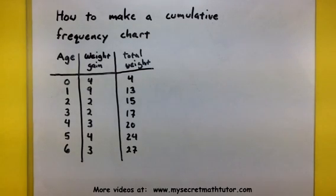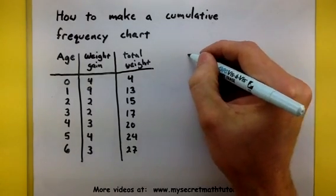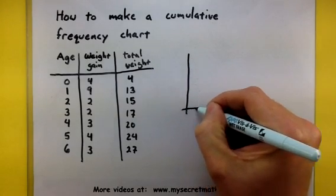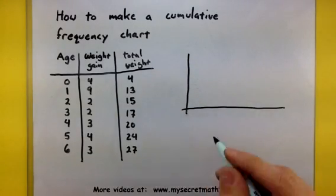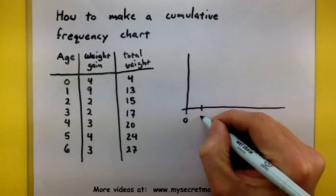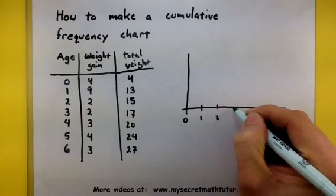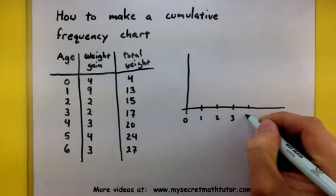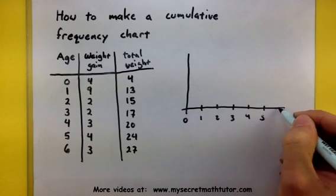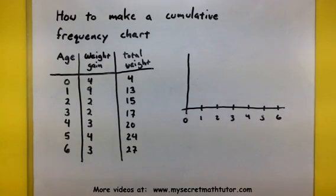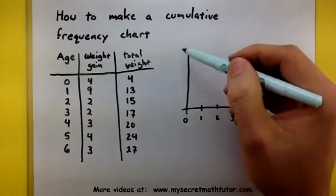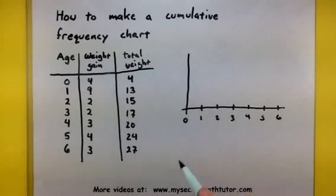Now let's take this information and start to make our chart. Along the bottom of this chart, I will keep track of all the years. Now along the vertical axis, I'm going to keep track of the total weight.